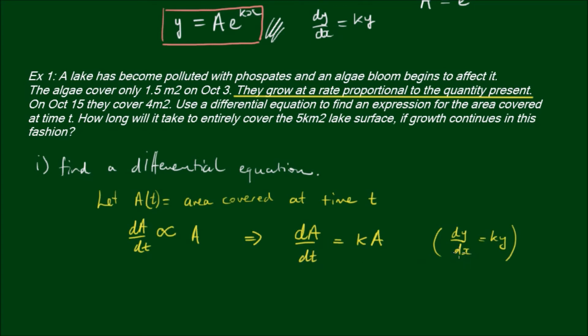If we solve this differential equation we know that the form is going to be something like, so instead of y now we've got area equals some constant times e to the k and since our independent variable is time it's e to the kt.